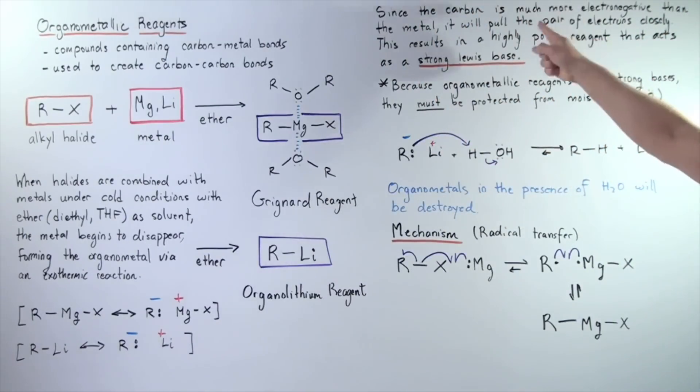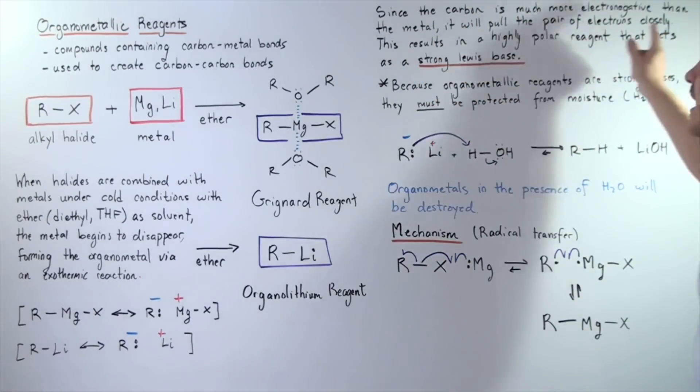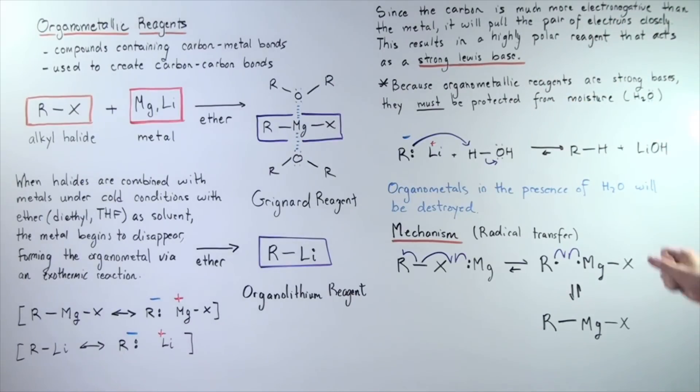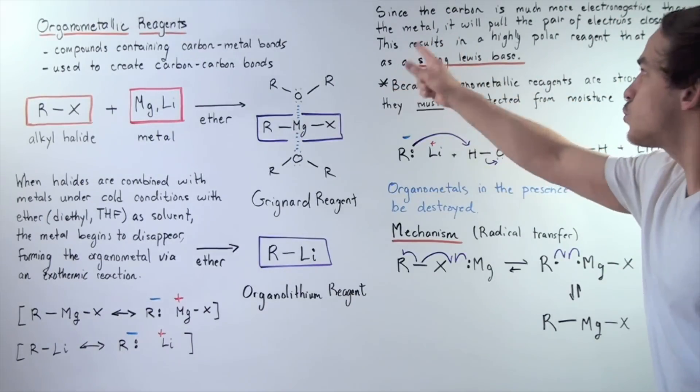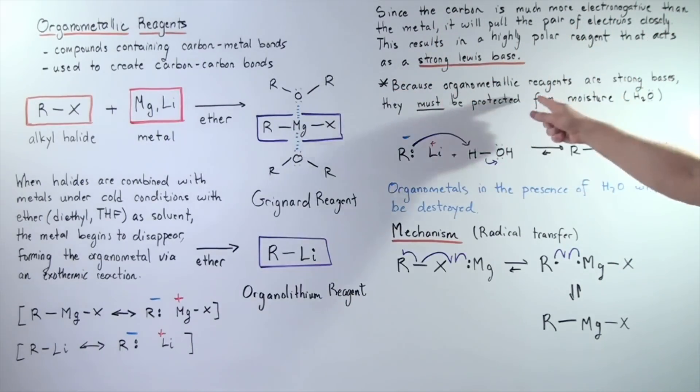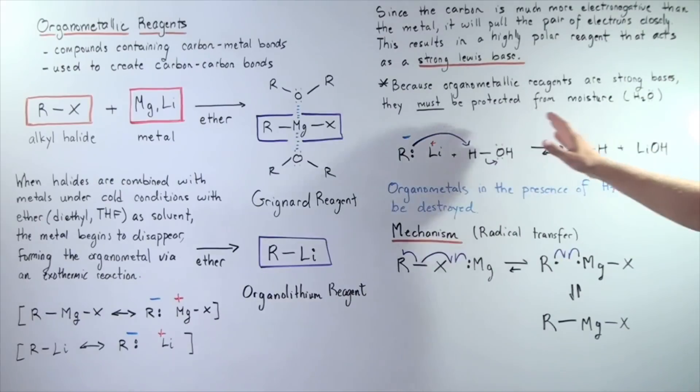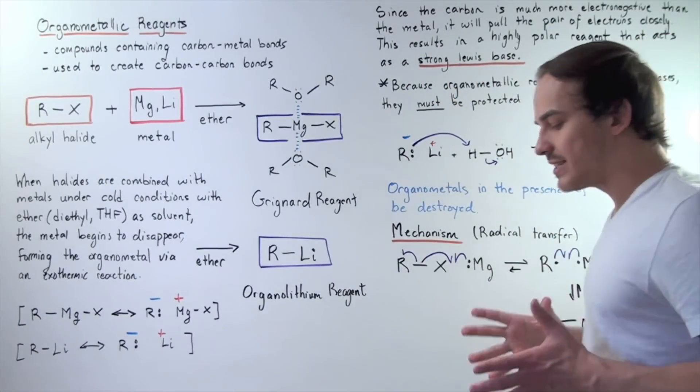So once again, since the carbon is much more electronegative than the metal, it will pull the pair of electrons closely. This results in a highly polar reagent that acts as a strong Lewis base.